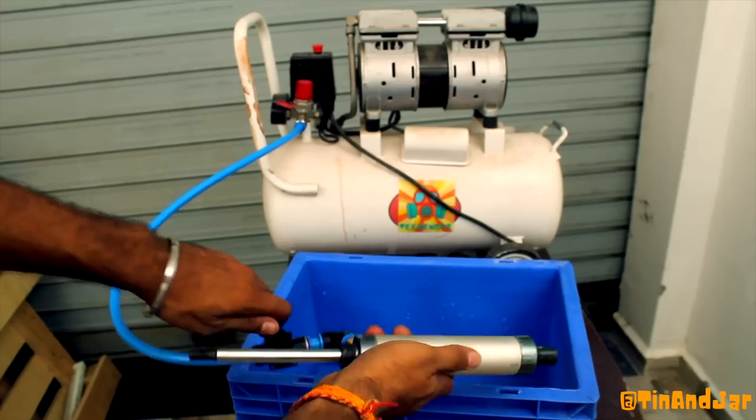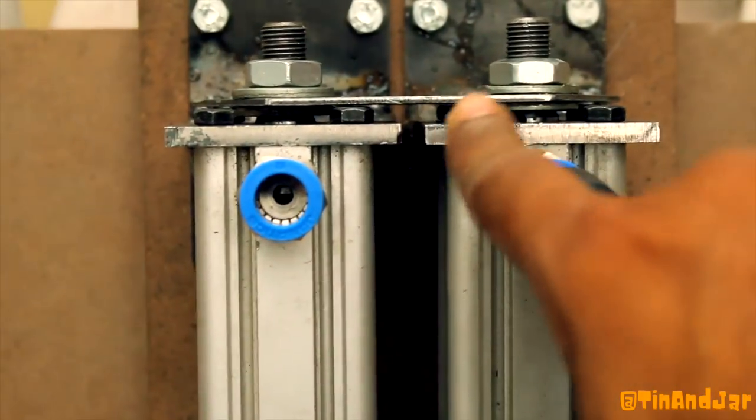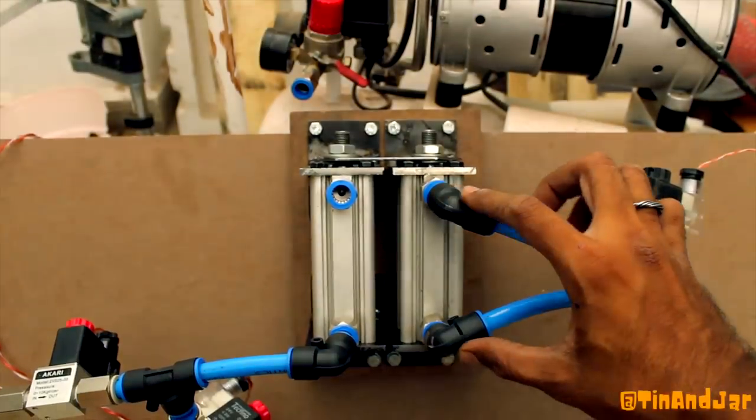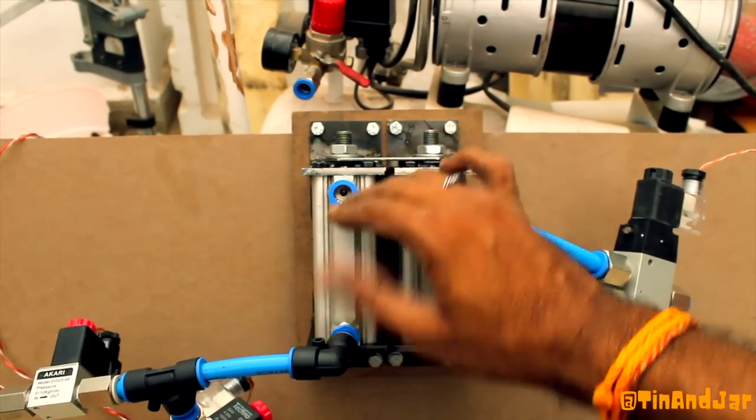And if you connect it with the compressor, we have clamped both cylinder rods together. And it will be controlled by this solenoid. When this cylinder moves up, another cylinder will also move with it.